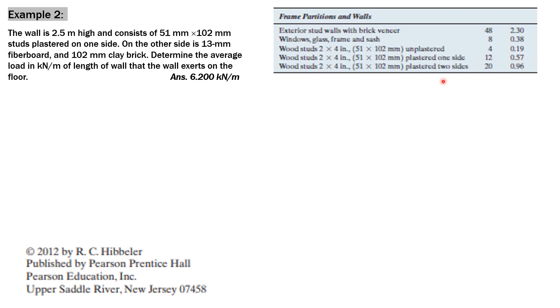It is 0.57 kilonewton per square meter or kilopascals. Then, for the other side, we have a 13 mm fiberboard.